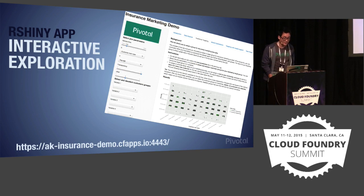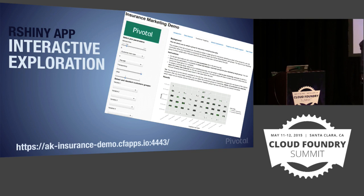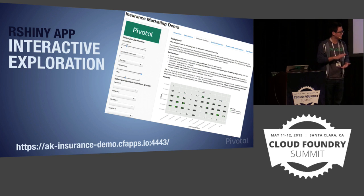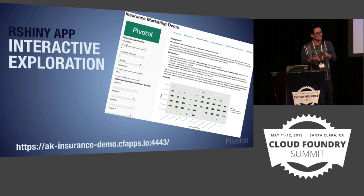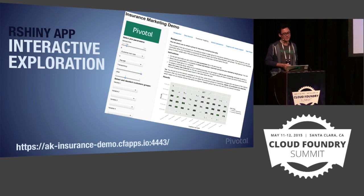Another example I created with my R build pack is what we call the Insurance Demo. It's basically an insurance data set, and the app allows you to explore the data. The goal is to find valuable new customers — you can create some rules manually, or you can just train a model that picks out these customers for you, and then compare the performance of your manual rules against the model. The model is usually a lot better. This is an example of the second approach where computation actually happens in the Cloud Foundry app itself, possible because the data set is really small — like a megabyte.